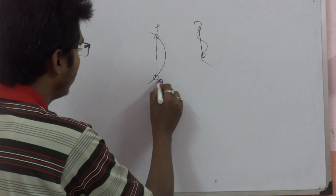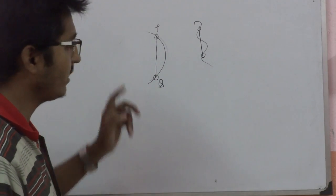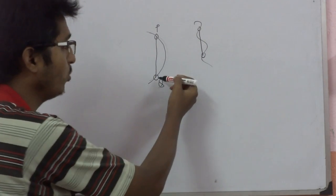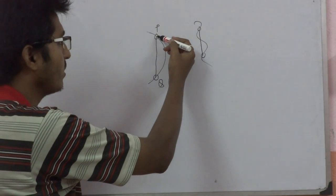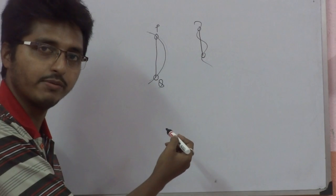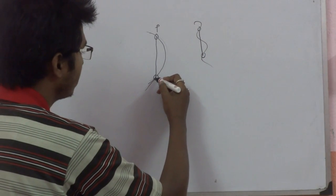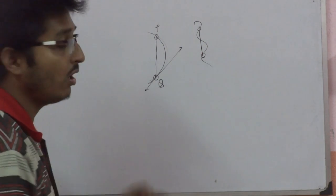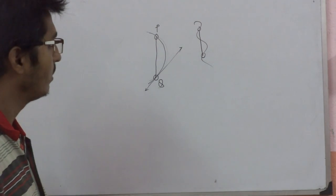So it is chord of the curve and the name of the points are P and Q. If possible, suppose P approaches Q along the curve. That means P is proceeding towards Q along this curve. What will happen? This chord will be like this, and this is called tangent to this curve at the point Q.